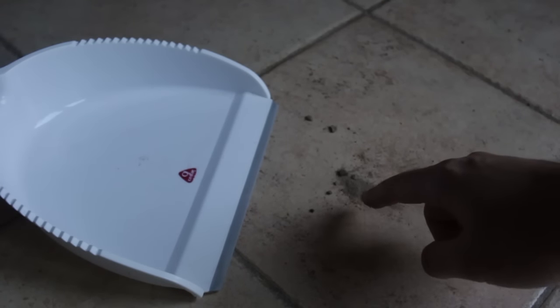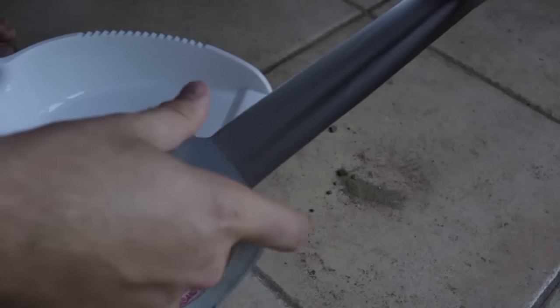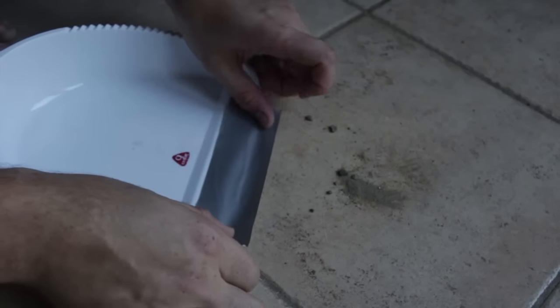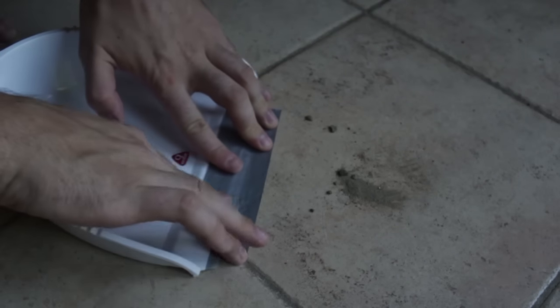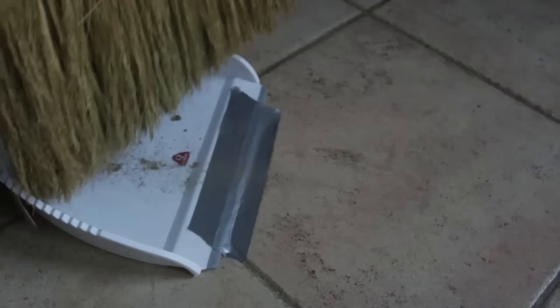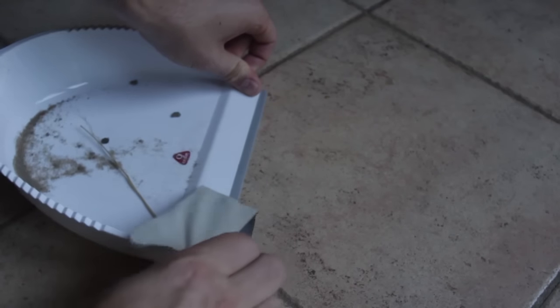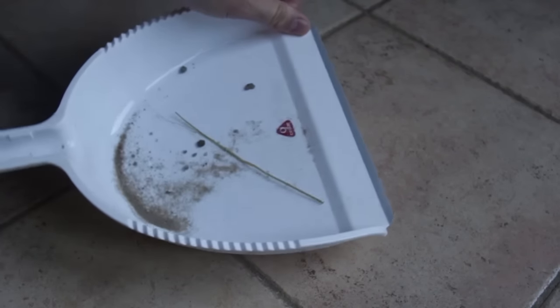You know how it's nearly impossible to get this little dirt onto your scooper? Grab some duct tape and stick it onto your scooper and the floor just like this. Get all the dirt into your scooper, then grab the duct tape, pull it off, and you're good to go.